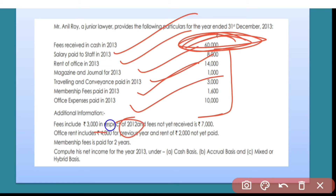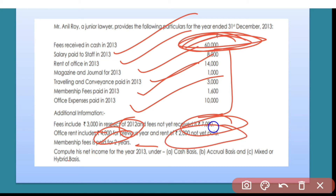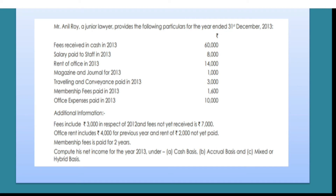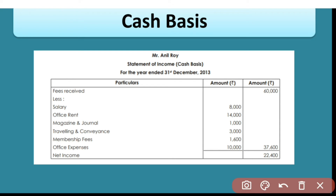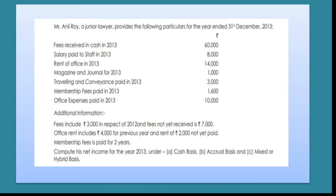Additional information: the fee includes three thousand from the previous year 2012, and fee not yet received is seven thousand. Office rent includes four thousand from the previous year, and two thousand not yet paid. Membership fee is paid for two years. For the cash basis, we simply record receipts and payments as they are — whatever has been made on the cash basis is recorded, with no adjustments made. The difference between income and expenses gives you the net income.